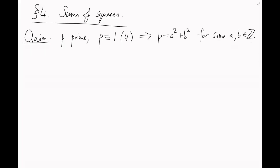Section 4: Sums of squares. A while back, I claimed, without proof, the following classical result. If p is a prime, and p is 1 mod 4, then p equals a squared plus b squared for some integers a and b. I'm going to prove this geometrically.